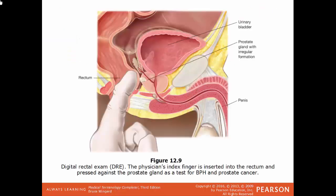In this illustration, we have an example of a DRE, a digital rectal exam. This would be the rectum, this would be the prostate gland, and this would be the male's urinary bladder. The finger is inserted into the rectum, usually to feel around to see if anything feels abnormal — a good way to check for any prostate issues that a male may have.